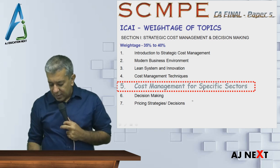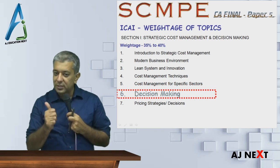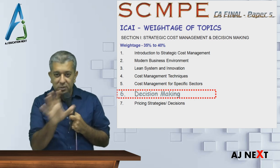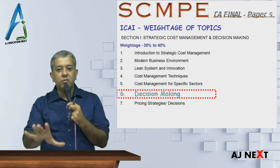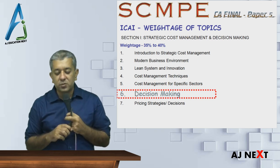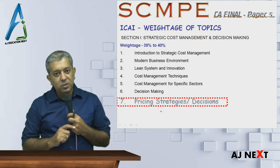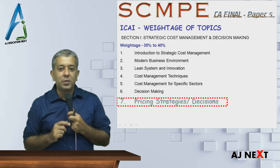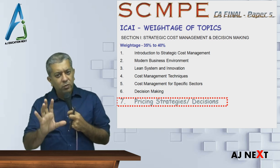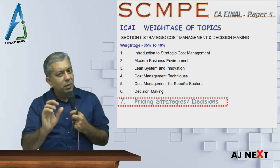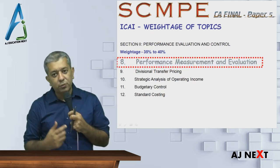Sixth is decision making and pricing strategies - core decision making situations will be there, you try to decide whatever is best for the company. And seventh is pricing decisions - what should be the selling price for your product. I'm just trying to give you an overview, not trying to describe in detail what is there in each and every chapter.